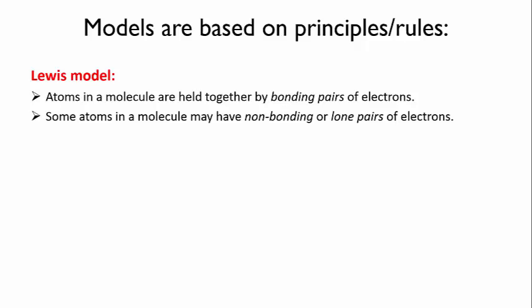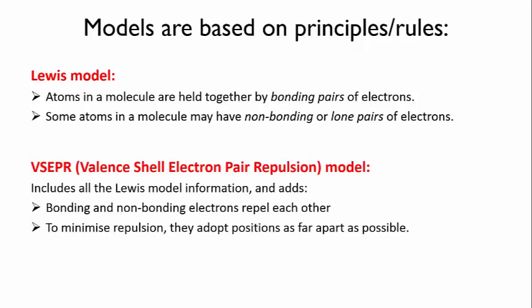All models are based on principles or rules that govern how the model works. The basic ideas behind the Lewis model are that atoms in a molecule are held together by shared pairs of electrons, called bonding pairs, that are located between the two atoms being bonded, and that the remaining valence electrons may be distributed as non-bonding pairs or lone pairs. The VSEPR model takes those principles and adds a few of its own.